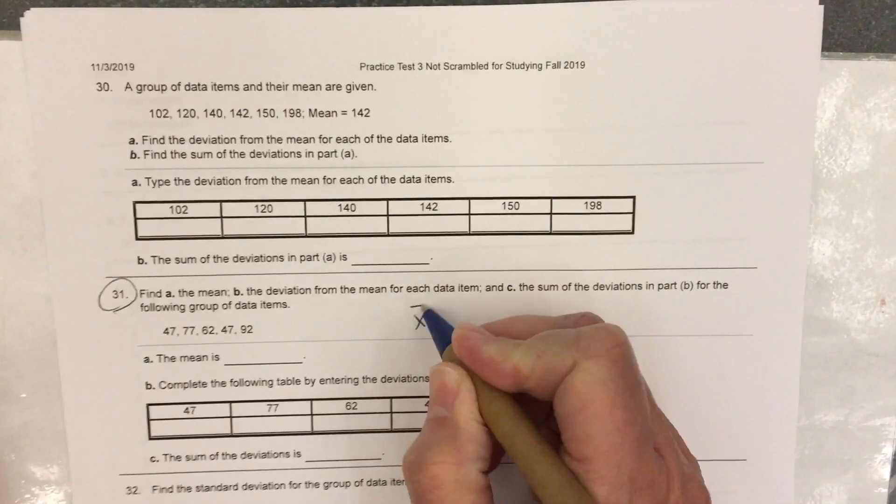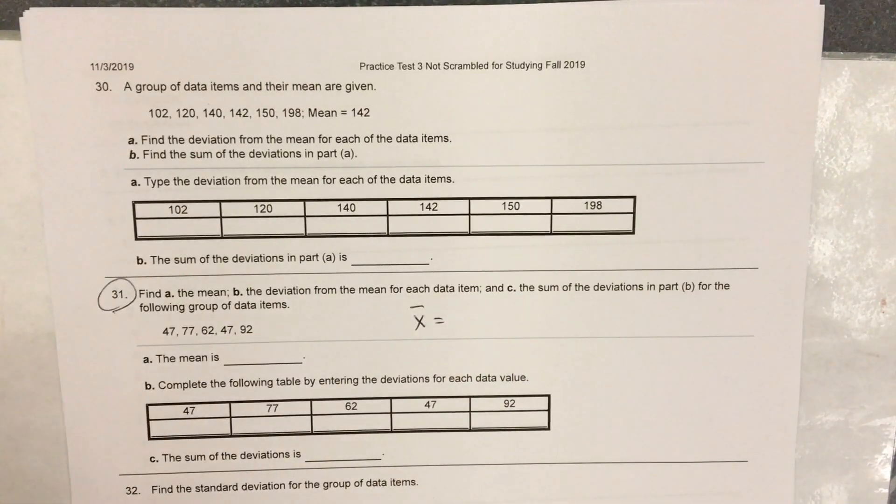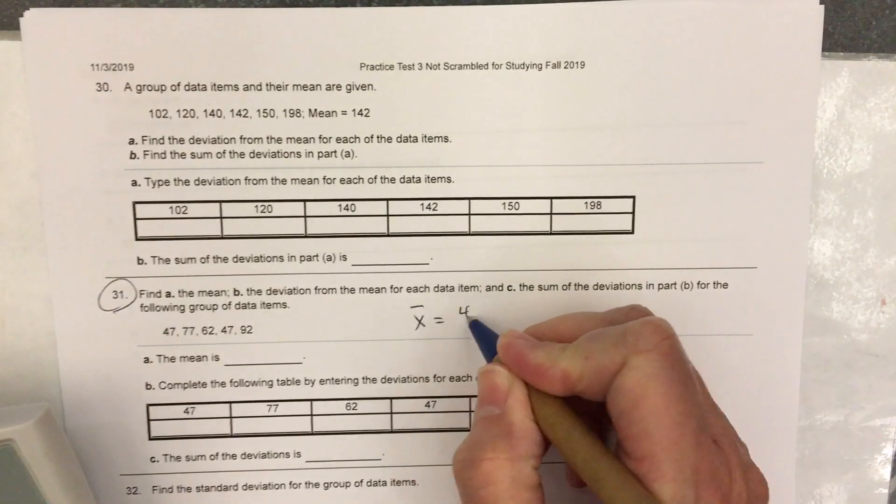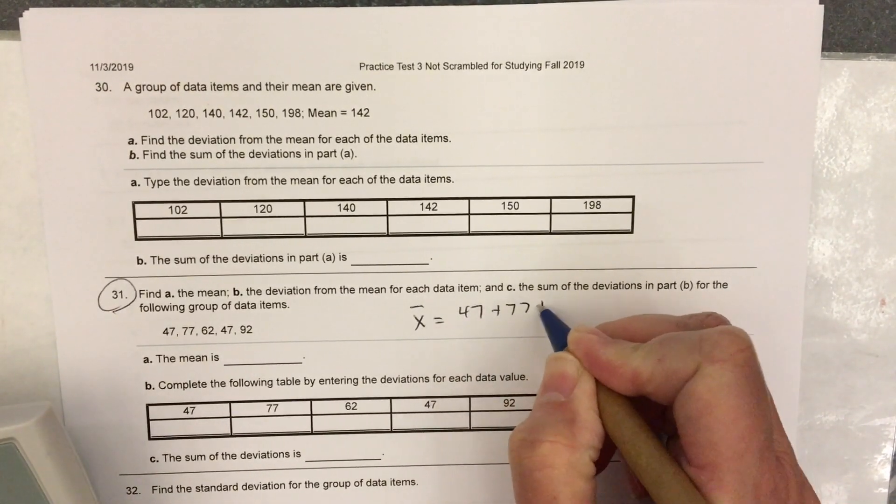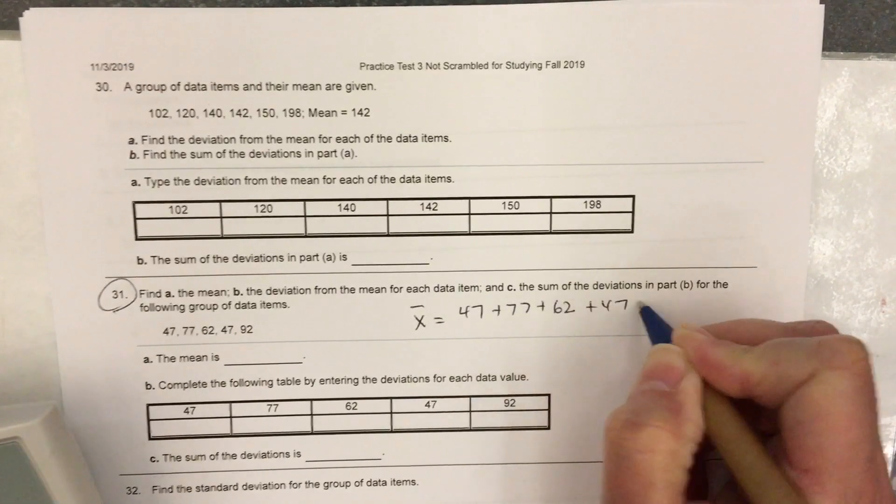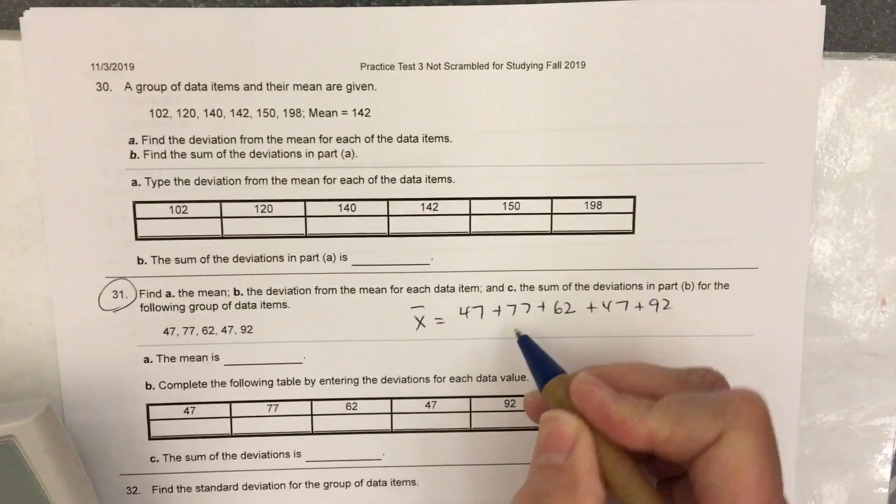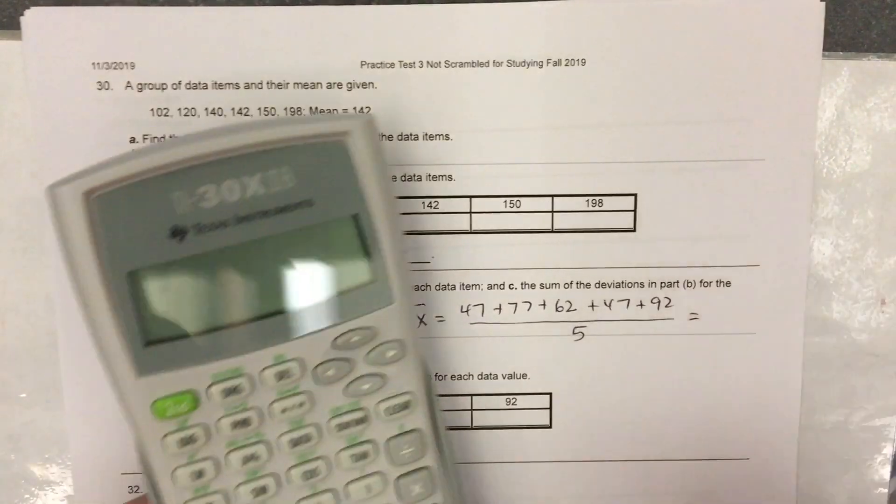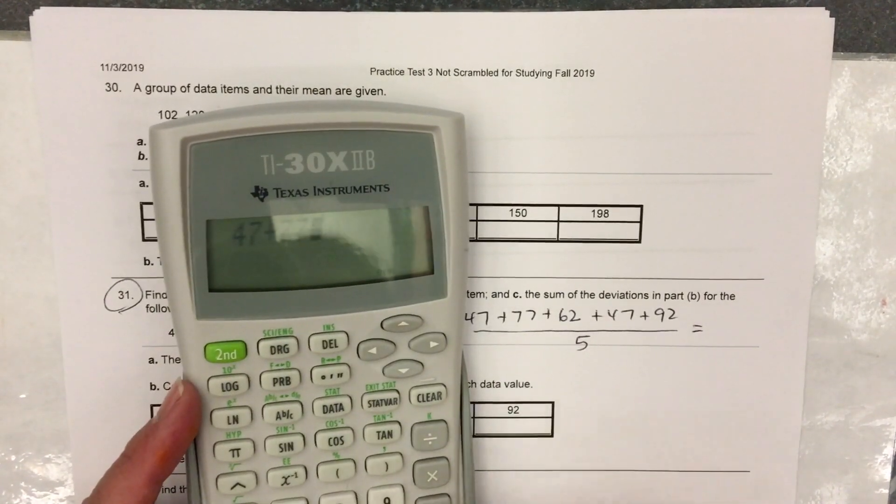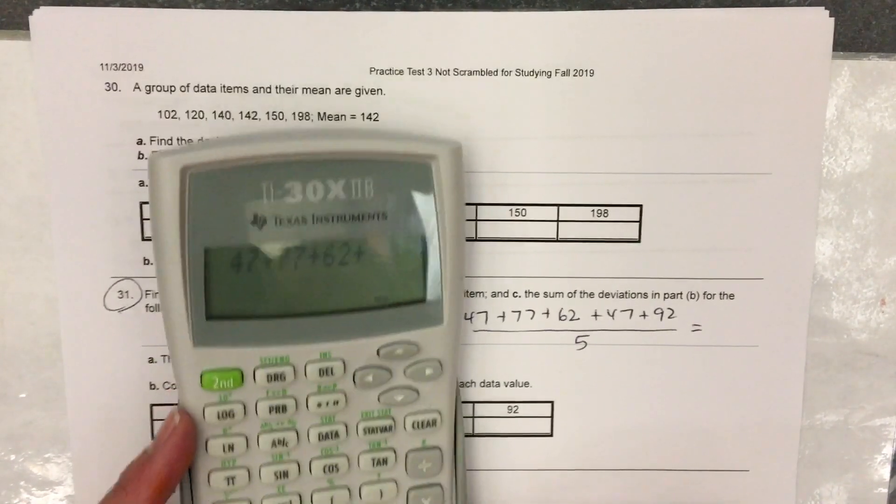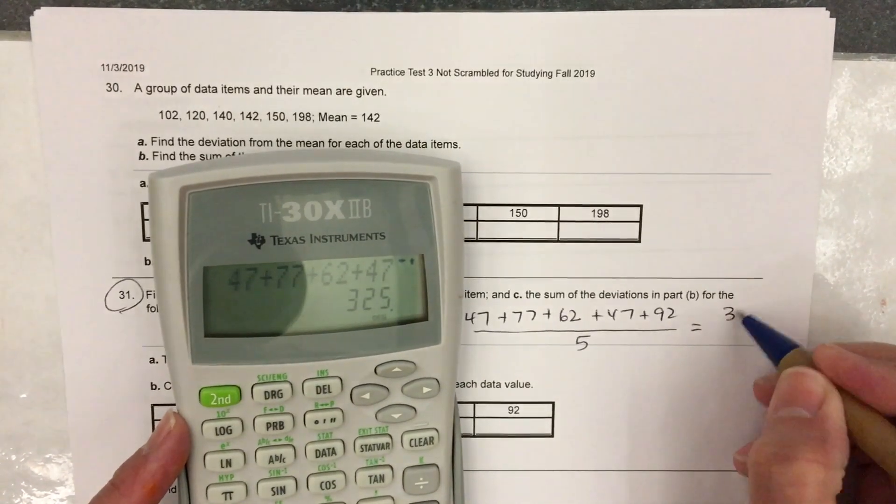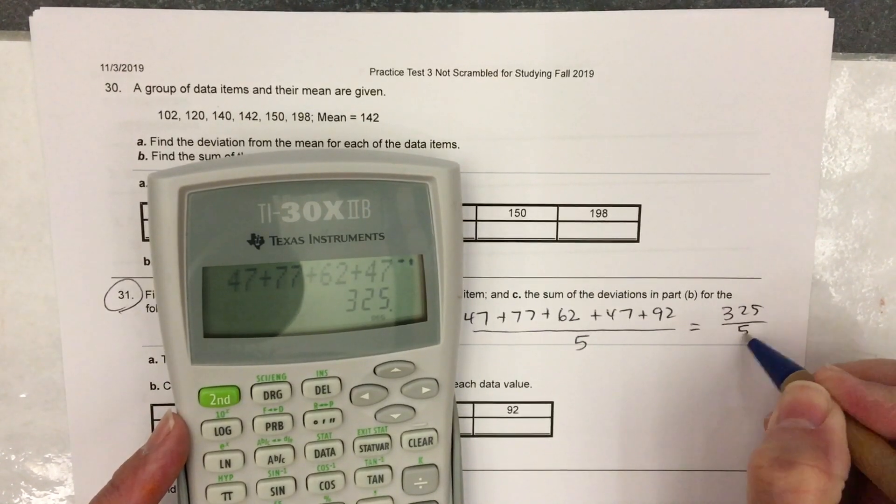For the mean, I'll write it as x̄, that's the symbol for the mean. It's going to be 47 plus 77 plus 62 plus 47 plus 92, divided by 5 because there are 5 scores. So 47 plus 77 plus 62 plus 47 plus 92, 325 divided by 5.